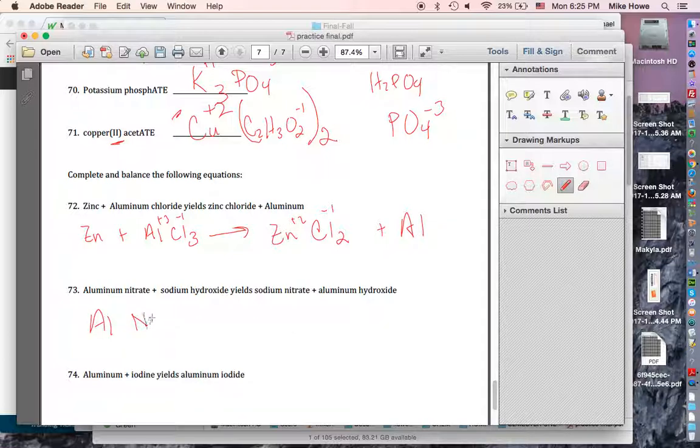Aluminum nitrate, you have Al. Notice that -ate ending. So that's on your bottom of the periodic table list of polyatomic ions. That's -1. That's +3. You've got to multiply that by 3. So you put parentheses and a 3 outside. Sodium hydroxide, NaOH. That's +1. That's -1. So you're good.